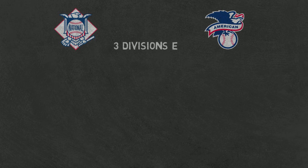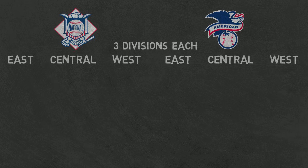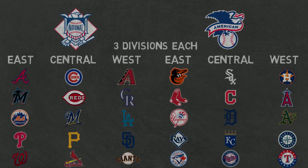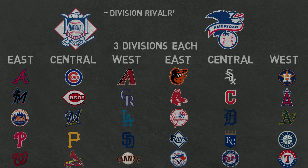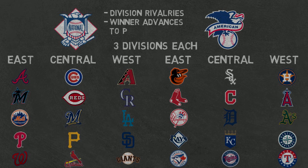Now that we've covered the two leagues, let's break them down further. Each league has three divisions based on geographical location: East, Central, and West. Each division has five teams. These divisions are where rivalries exist. You play the teams in your division the most, and the winner of each division automatically qualifies for the postseason or playoffs.